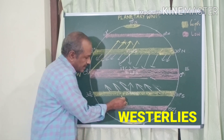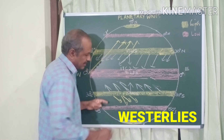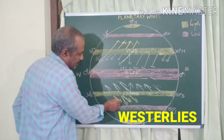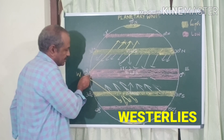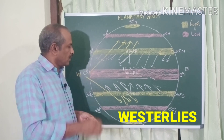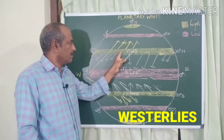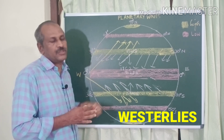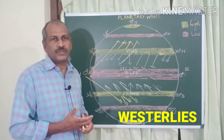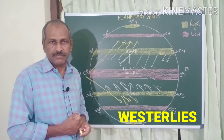In the southern hemisphere, the wind also deflects to its left when blowing from the subtropical high pressure belt to the subpolar low pressure belt, so its direction is also exactly from the west — also called westerlies. But do the westerlies blow with equal strength in both hemispheres? No.